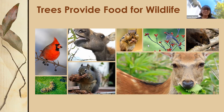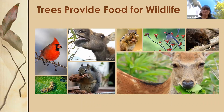Acorns feed over 100 species of animals. Pine cones feed squirrels, chipmunks, and woodpeckers. Leaves feed large herbivores and small caterpillars. Twigs and bark are a critical source of food in the wintertime for chipmunks and 35 species of birds. Bark contains potassium, calcium, and magnesium — all three are essential for bone health.